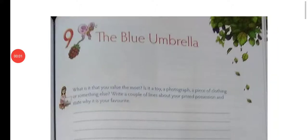Hello everyone. In today's video we are going to read Chapter 9 of English Mulberry Class 6. The story is titled 'The Blue Umbrella'. It's a famous short story written by Ruskin Bond, and it has been so popular that a movie has also been made in recent years.